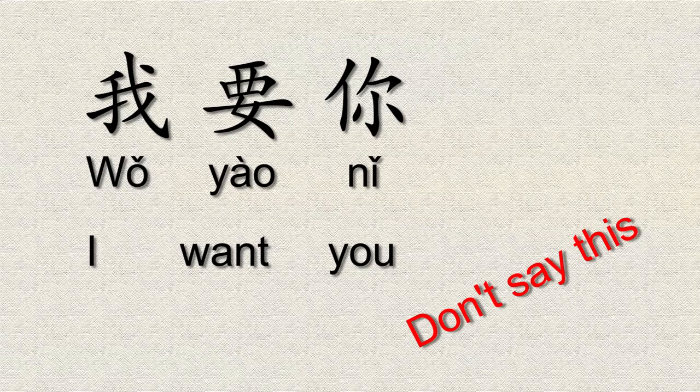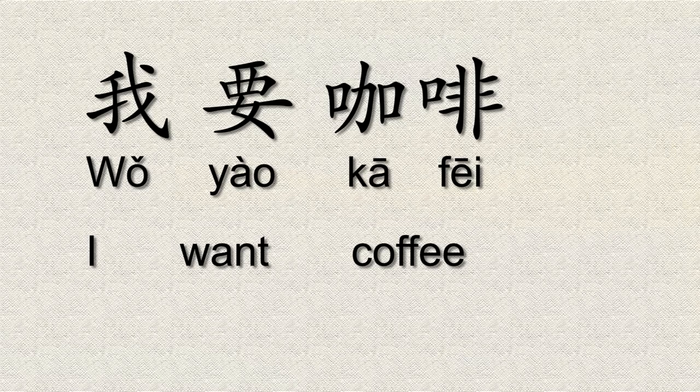Now let's turn our attention to 要. Using 要 just before a noun — something like 我要你 — you wouldn't say that. It sounds very creepy, so don't say that to people. But if you were to say 我要咖啡, that would simply mean 'I want coffee.'